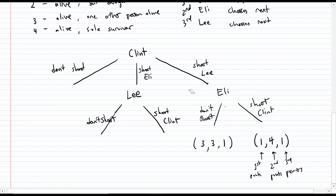Here we're assuming that Clint is the first player, Eli is the second player, Lee is the third player. Now what if Clint shoots Lee but Eli decides not to shoot? Then who's alive at the end? Both Clint and Eli are both alive. The third person, Lee, is dead. And so they're both alive with one other person left, so the scores will be 3, 3, and 1. We can do the same sort of analysis. If Clint decides instead to shoot Eli and Lee decides to shoot Clint, well then Lee is the only one alive and the other two are dead, so the scores will be 1, 1, and 4.